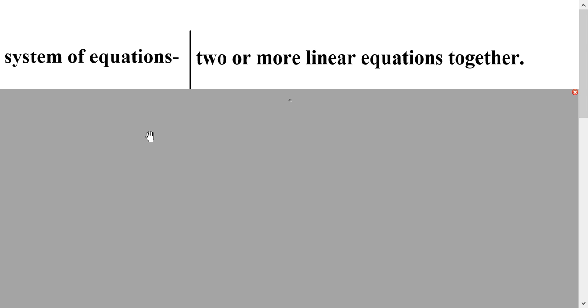So systems of equations are when we have two or more linear equations together. So we have two equations that both of the graphs are lines, and we're graphing them together on the same graph. Now systems can be of more than two, but usually in this chapter, we're only going to do a system of two equations.